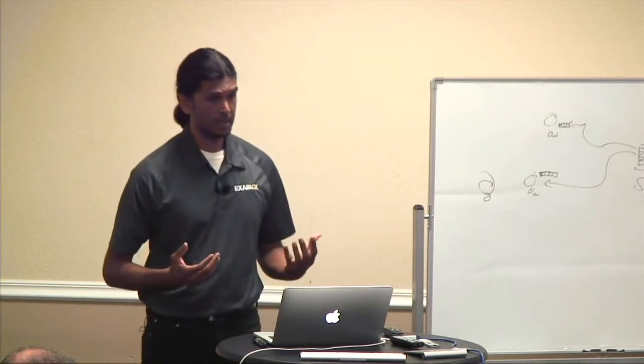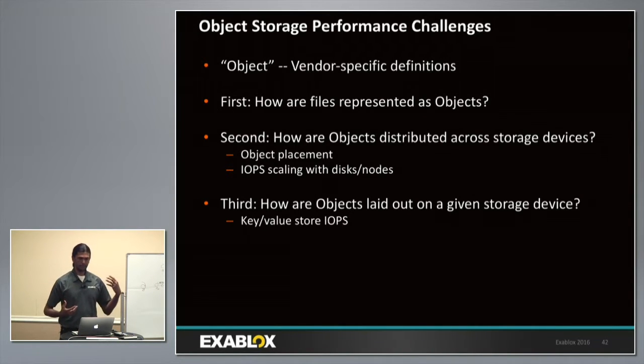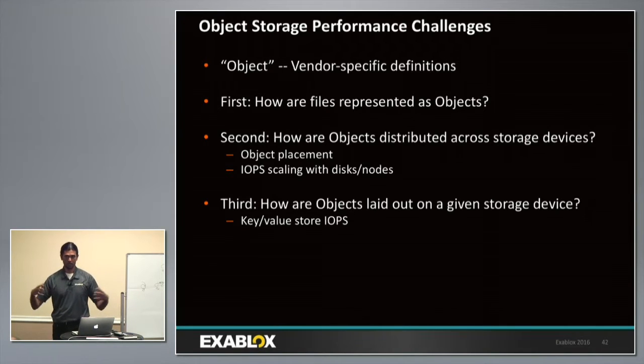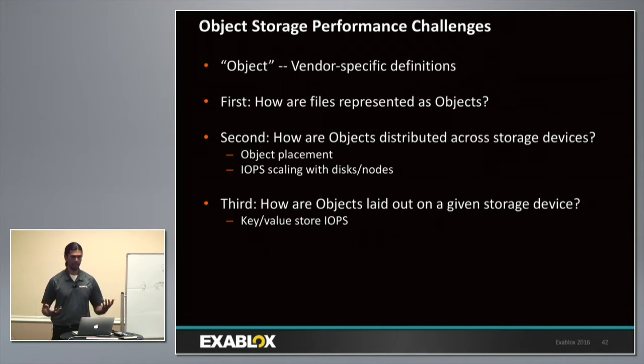These are generic challenges for object storage performance. Object has vendor-specific definitions and comes with its own challenges — there are various sizes. The three-pronged problem is: how are files represented as objects by a storage system; how are objects distributed across multiple storage devices so that storage capacity can scale out; and how are objects laid out at each storage device. For each of these we can look at the challenges in getting high IOPS.